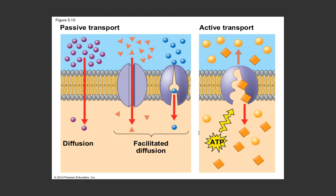This sodium-potassium pump is an example of an antiporter because they're going in opposite directions - sodium goes out, potassium comes in, and out and in are opposites. Comparing passive and active transport side by side: diffusion has small nonpolar molecules squeezing between phospholipids from high to low concentration; facilitated diffusion has molecules moving with the help of a channel or carrier protein, still from high to low, with no ATP; active transport requires ATP to move molecules against their concentration gradient, from low to high.